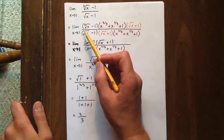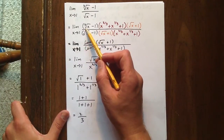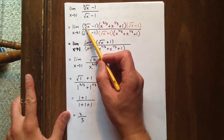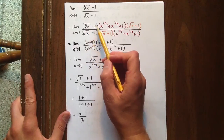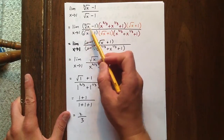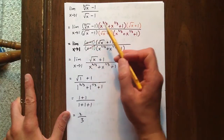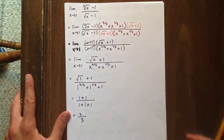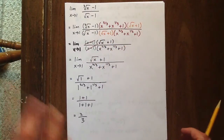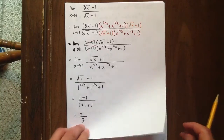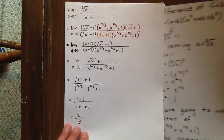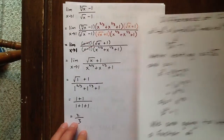It gets interesting because we have to consider the cubed root of x minus 1 as one of our factors as well. If we're thinking of the cubed root of x minus 1 as a factor, we need to start thinking a little bit about the difference of cubes.